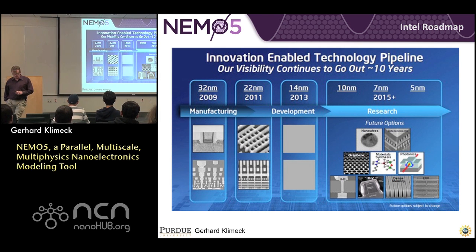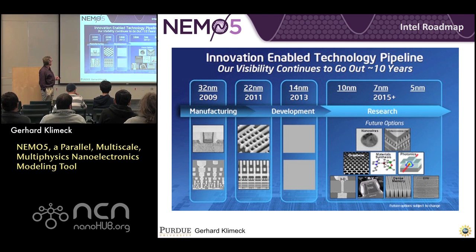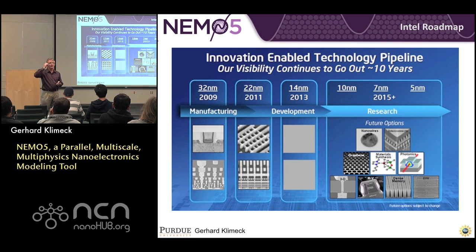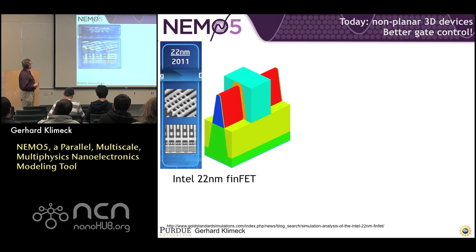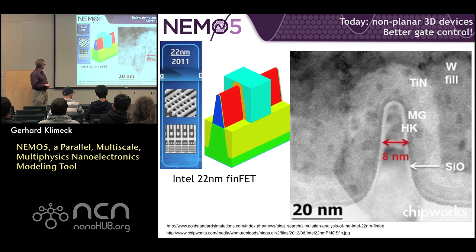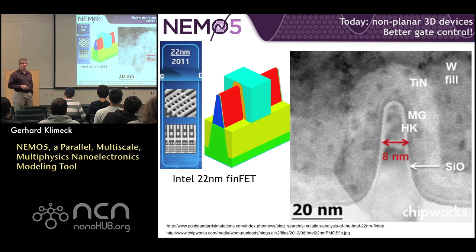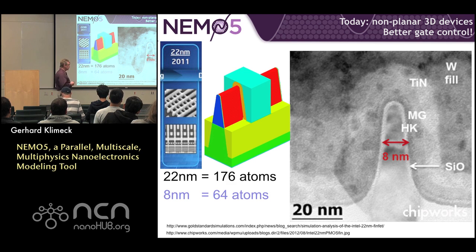I'm going to dive into a couple of aspects of nanoelectronics. I'm sure you've seen the Intel roadmap — it's always good to show an older roadmap so you can look back at how good or bad the predictions were. I'm going to focus on the 22 nanometer FinFET. If you look carefully with an SEM, you can measure the fin to be about 8 nanometers thin. Even though it's a 22 nanometer gate length, the fin is 8 nanometers thin — that's about 64 atoms. That's pretty small. Very countable.